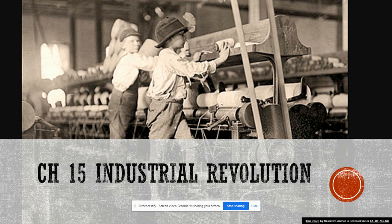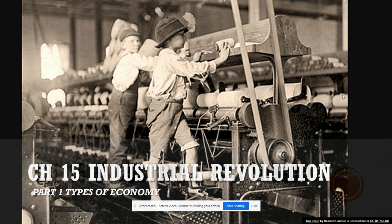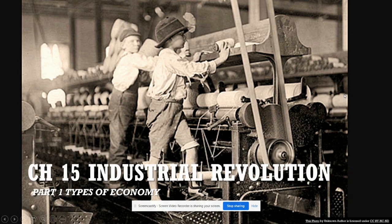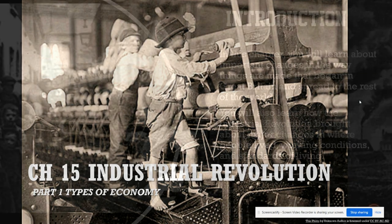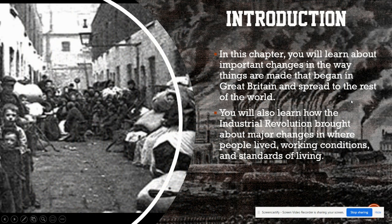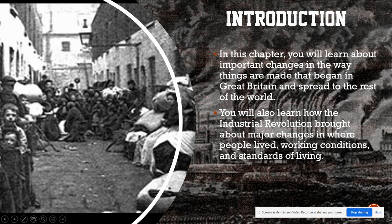We're looking at chapter 15, the Industrial Revolution. The first part covers different types of economies. In this chapter, you learn about the important changes in the way things were made, which began in Great Britain and spread to the rest of the world. You'll also learn about the major changes the Industrial Revolution brought about in where people lived, their working conditions, and their standard of living.